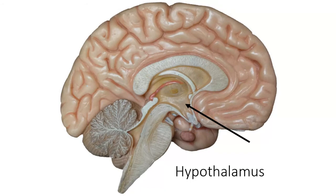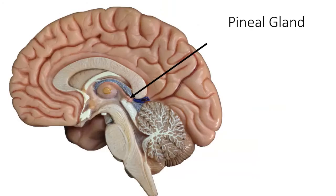The third part of the diencephalon is the pineal gland — that pink swelling right back here. The pineal gland is responsible for the production of melatonin. Melatonin monitors what we call circadian rhythms — your sleep-wake cycle. People also take melatonin to help fall asleep.